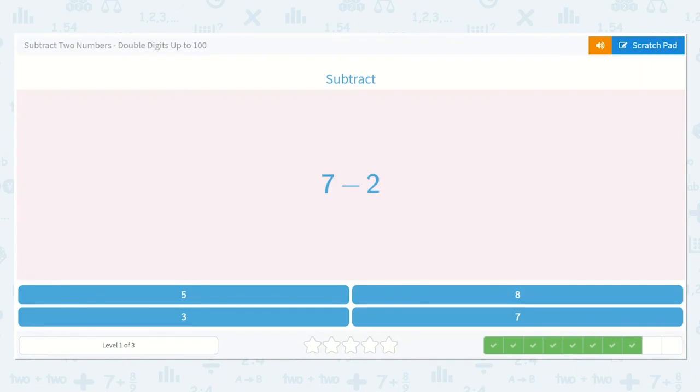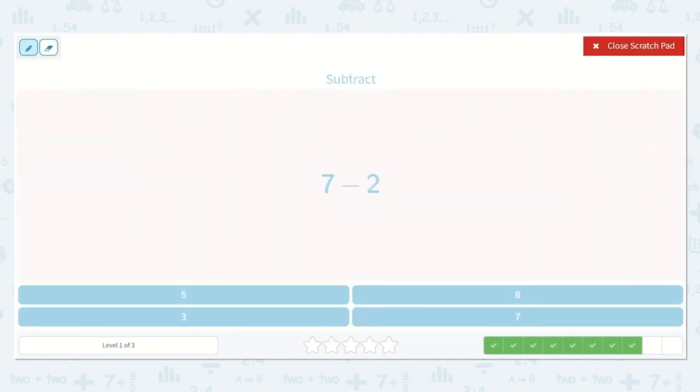Next, we have 7 minus 2: 1, 2, 3, 4, 5, 6, 7. And we take 2 of them away: 1, 2. We're left with 1, 2, 3, 4, 5. And I know that is reasonable because 5 plus 2 is 7. So 7 minus 2 would be equal to 5.